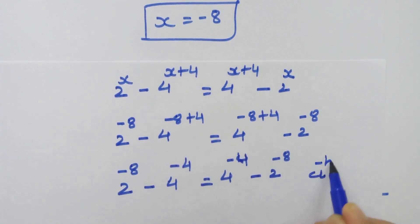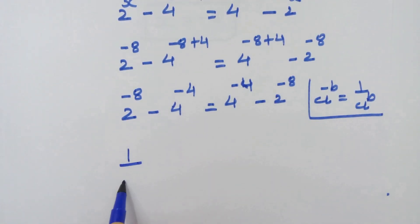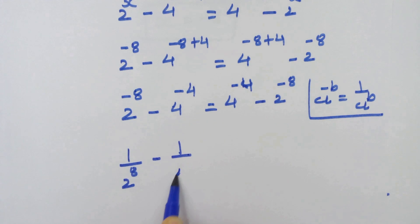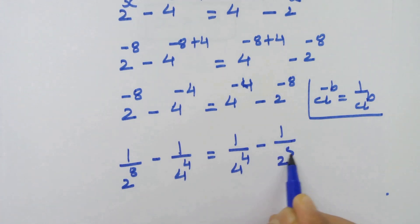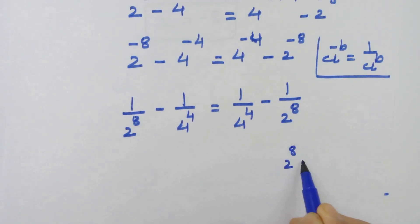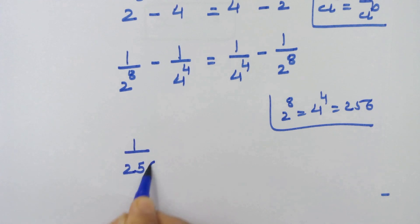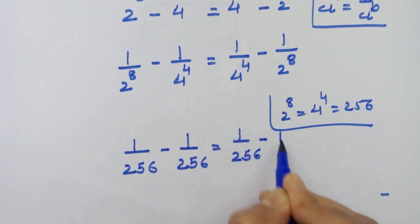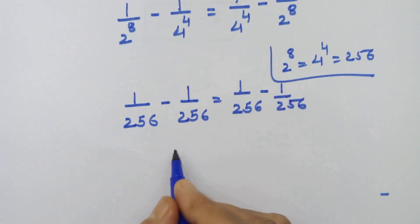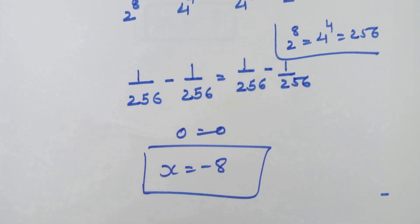If we have a raised to minus b, then we can write it as 1 upon a raised to b. Using this rule, we can write 1 upon 2 raised to 8 minus 1 upon 4 raised to 4 is equal to 1 upon 4 raised to 4 minus 1 upon 2 raised to 8. Now 2 raised to 8 equals 4 raised to 4 equals 256, so we have 1 upon 256 minus 1 upon 256 equals 1 upon 256 minus 1 upon 256, giving us 0 equals 0. So x equals minus 8 is the correct answer.